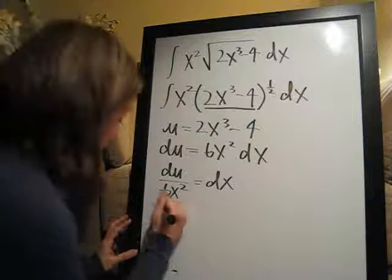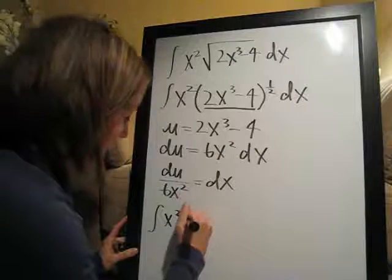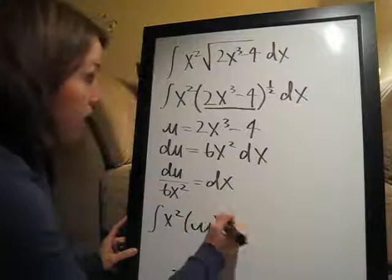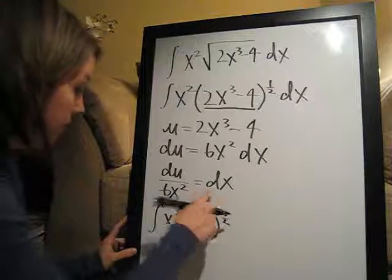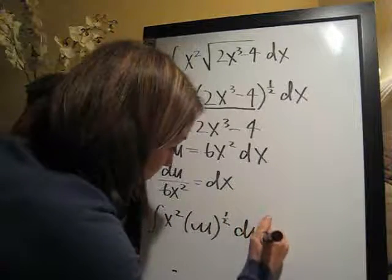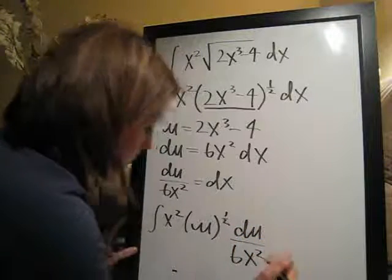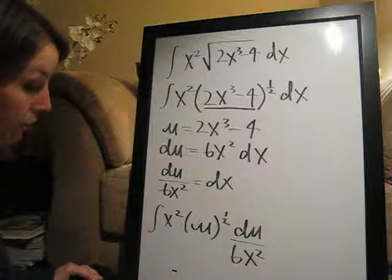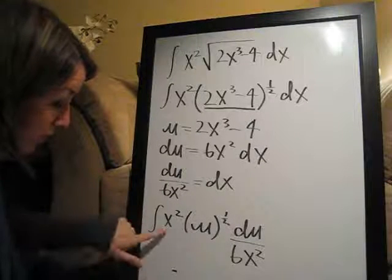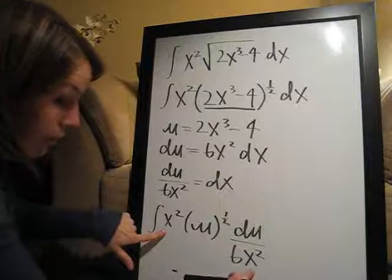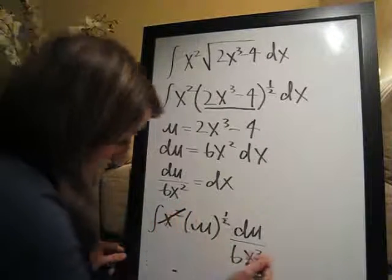So let's go ahead and do that. Now, we're going to have the integral of x squared times u. Don't miss that one half up there, u to the one half. And then for dx, we have du over 6x squared. Okay, so this is great. It worked out how we thought it was going to. We have an x squared in the numerator and an x squared in the denominator. So they both cancel.